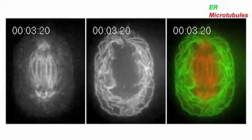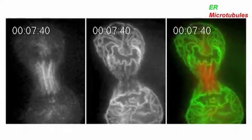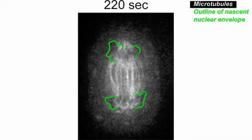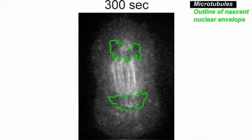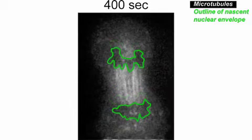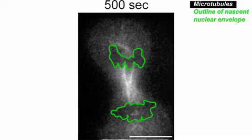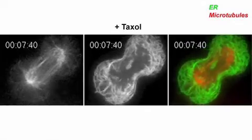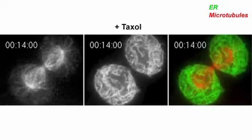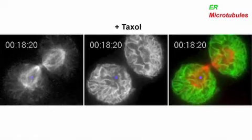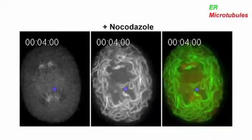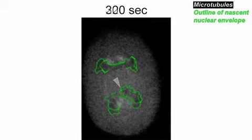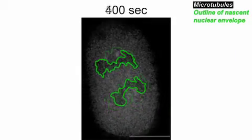Lu et al. think that ER cisternae might initially target the rim of chromosome masses in HeLa cells because the mitotic spindle and microtubule asters block the ER from contacting the outer and inner faces of the chromatin disks. Kirchhausen explains: "It's simply that the very rim is where you have topological access. We put taxol to lock the microtubules, and that retards the build-up of the nuclear membrane. Or if you add nocodazole at the time of division to depolymerize the microtubules, you have topological access and increase the rate at which the nuclear membrane forms."